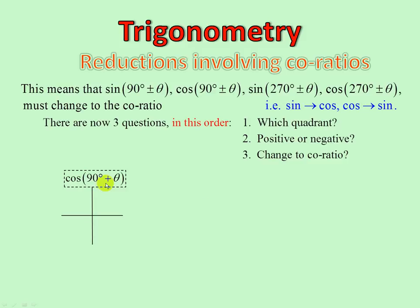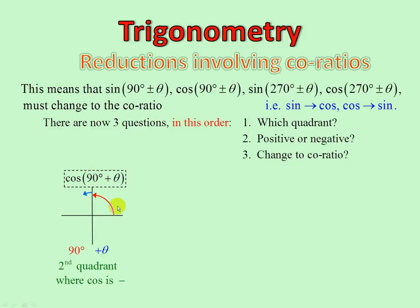Cos of 90 plus theta: first, which quadrant? Going 90 plus theta puts us in the second quadrant. Positive or negative? Cos in the second quadrant is negative. Does it change to the co-ratio? Yes, because it's attached to 90. So therefore it becomes negative sine theta. Don't say 'second quadrant where sine is positive' — it's cos of a second quadrant angle, and cos of a second quadrant is negative.